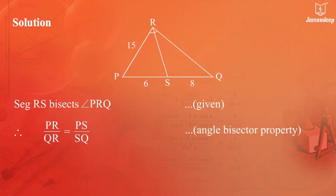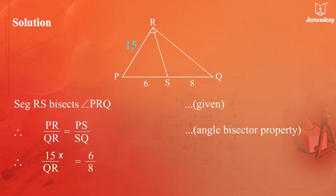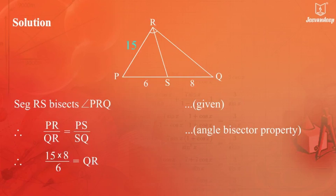Substituting the given values: 15 upon QR equals 6 upon 8. Therefore, 15 multiplied by 8 equals 6 multiplied by QR. Thus, QR equals 15 multiplied by 8 upon 6, which gives QR equals 20.